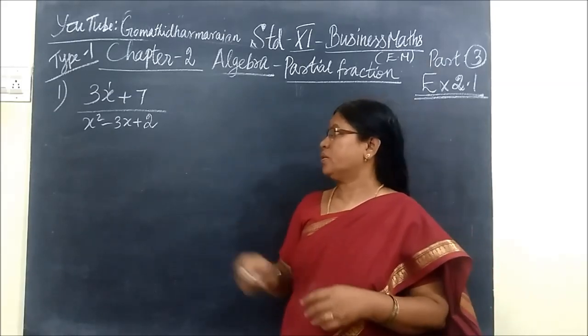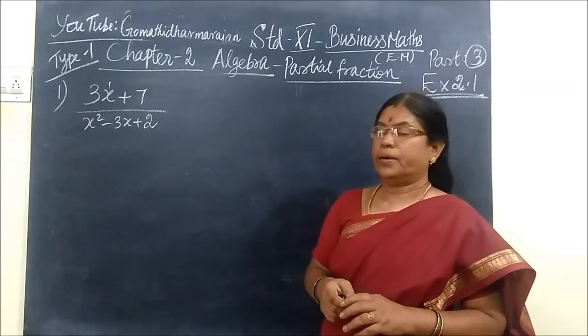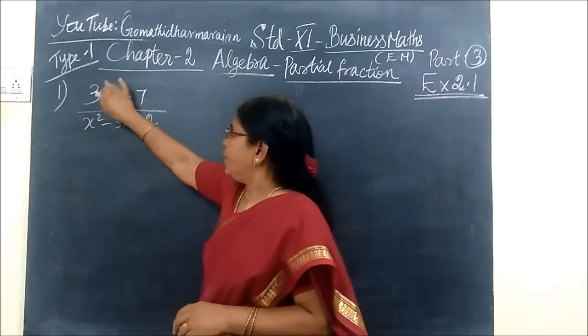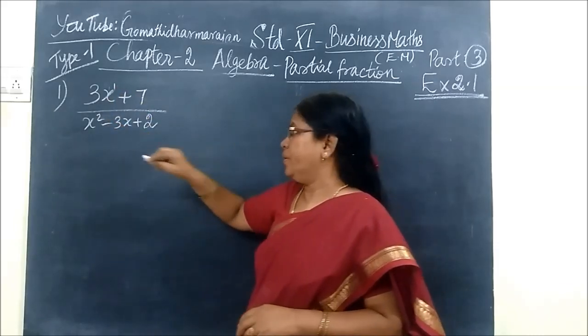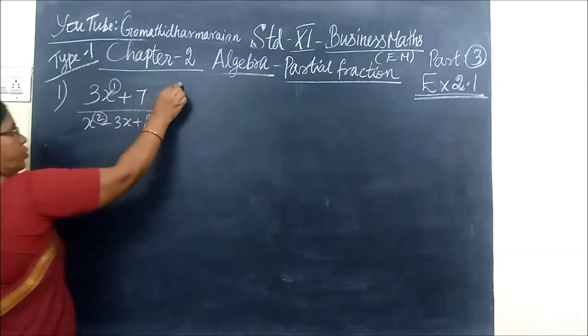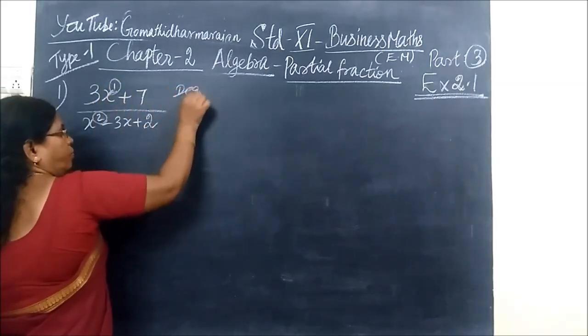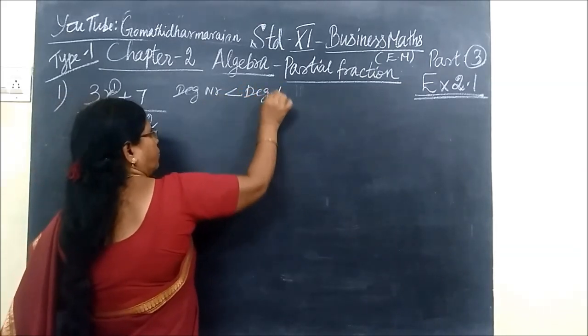Some students are asking this type of question. This is called Type 1. Type 1, the degree of numerator should be less than degree of denominator. Here, degree of numerator should be less than degree of denominator.